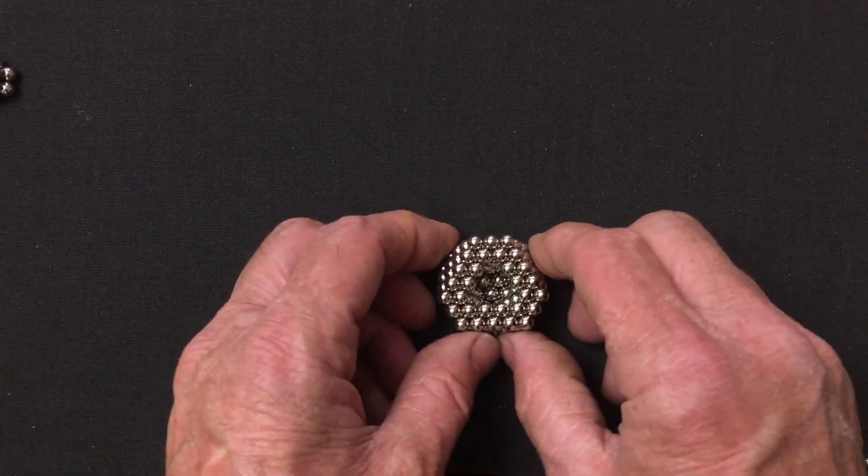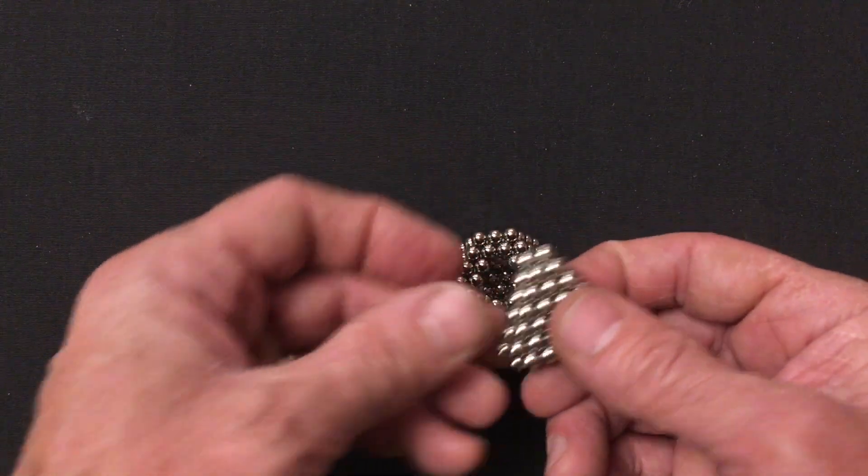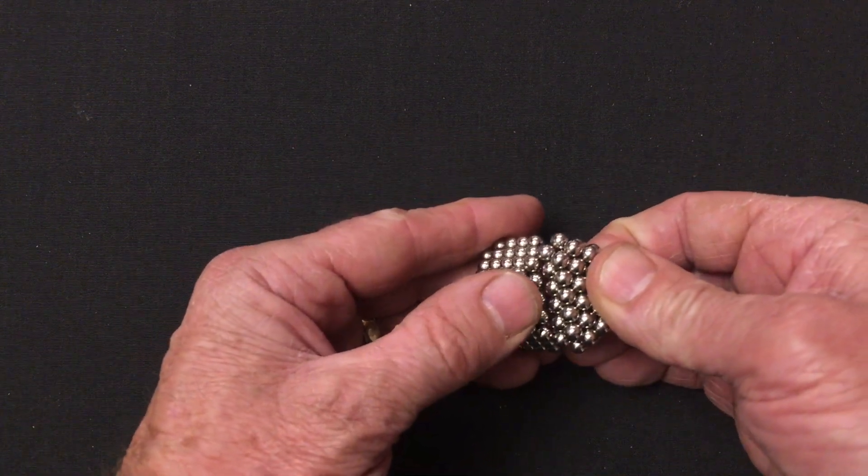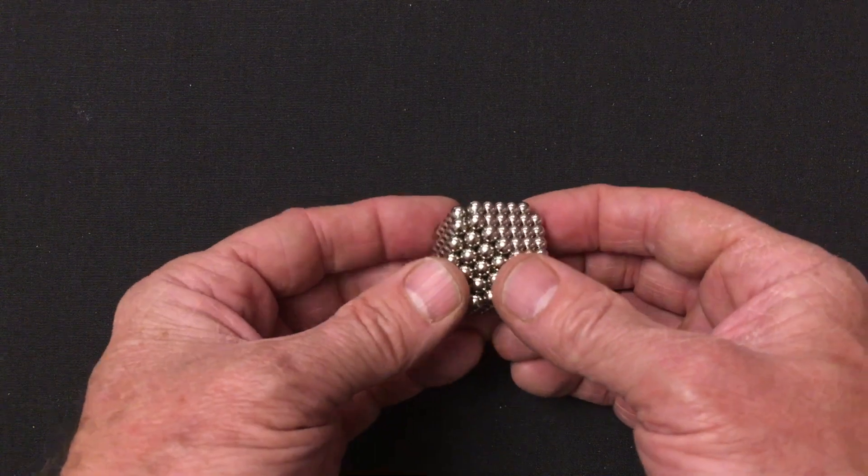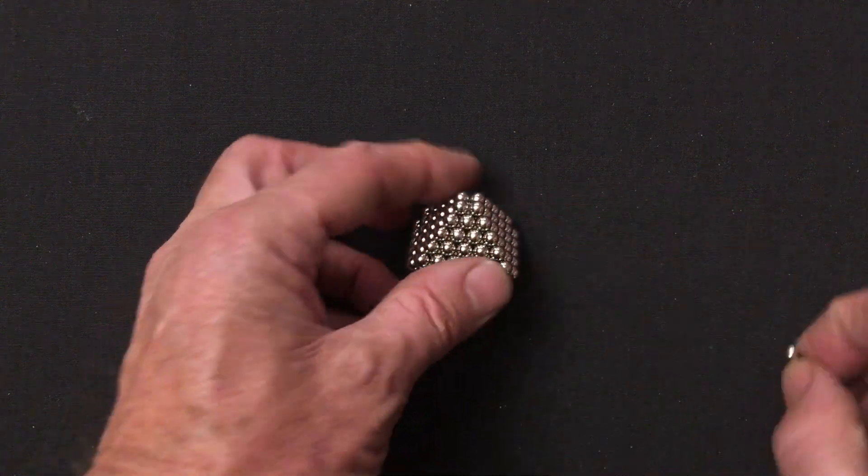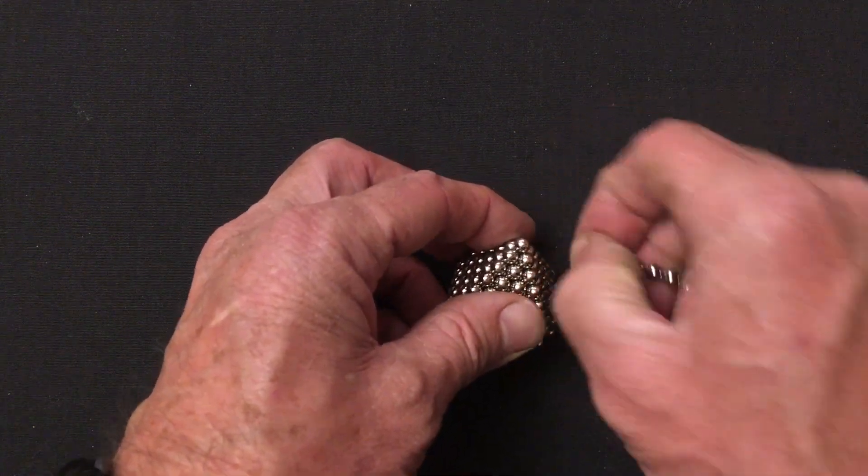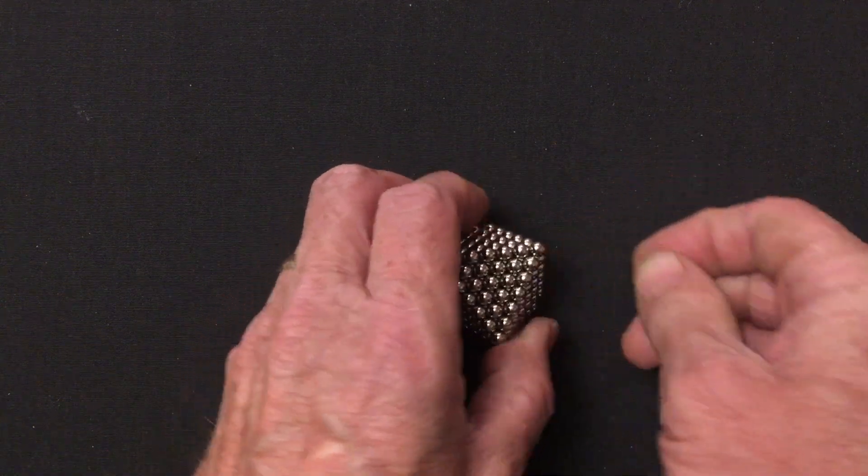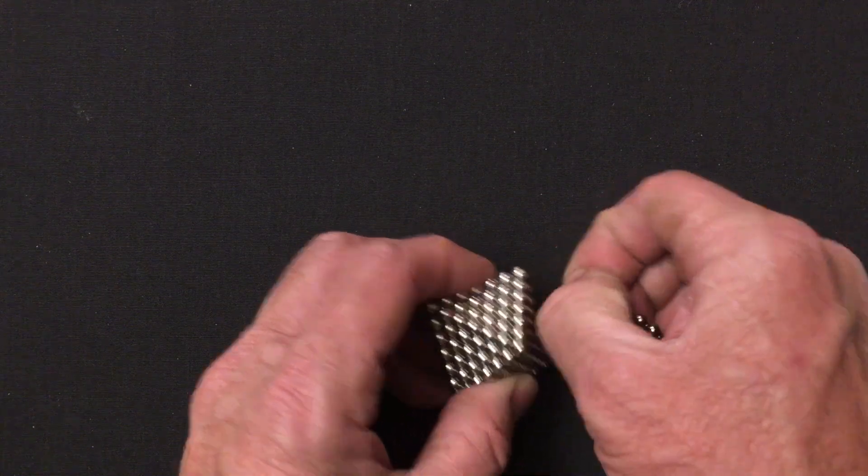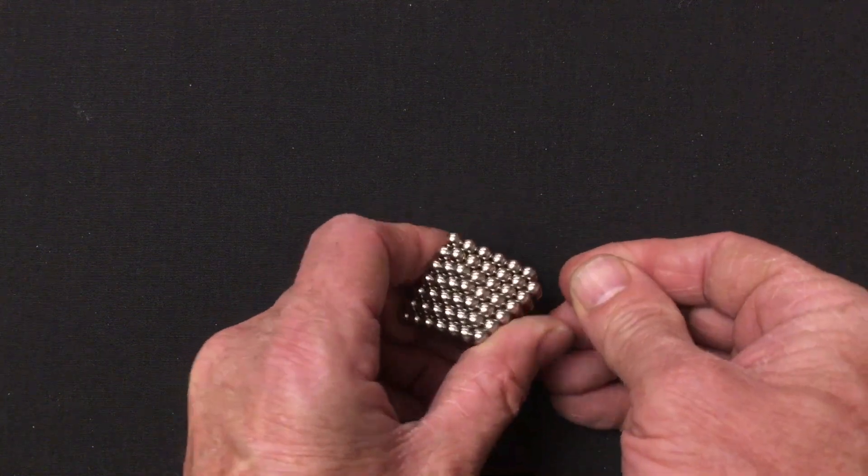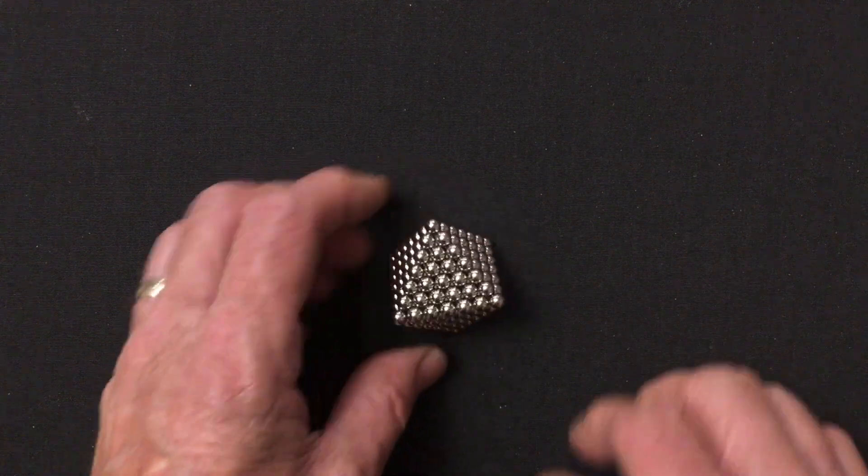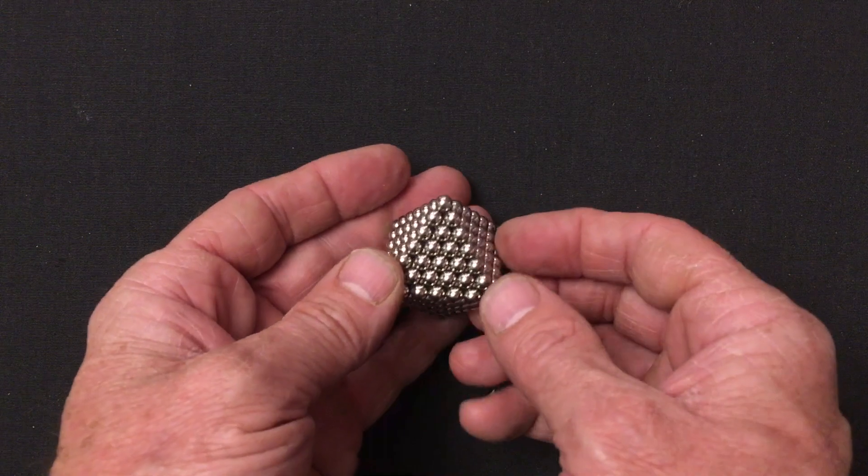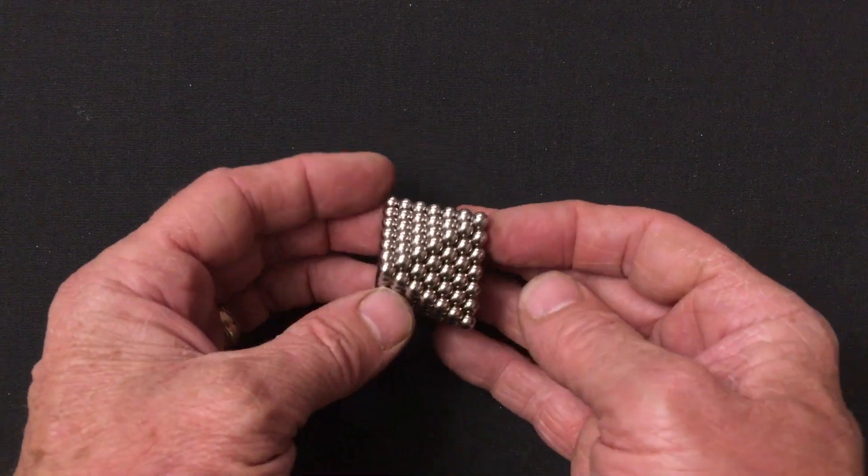Then the next step to finish off the build is just to add the top and to do that we match up the top and lay it on and then the final step is to add a magnet to each corner. The top three corners and the bottom three corners. And that is a very lovely octahedron with edge count seven.